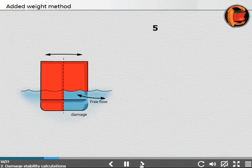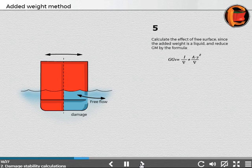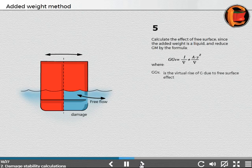Step 5: Calculate the effect of free surface since the added weight is a liquid, and reduce GM by the formula: GGV = I/∇ + A×Y²/∇, where GGV is the rise of G due to free surface effect.